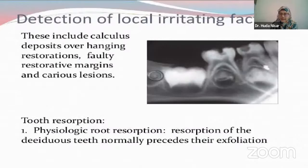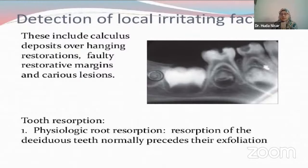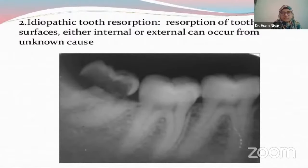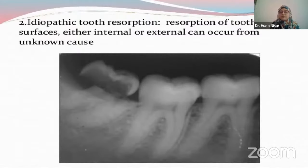Detection of local irritating factors: local irritating factors could be calculus or overhanging restoration, both of which you could appreciate radiographically. Calculus could be seen as a radiopaque mass, which is not very well defined, and is visible only in patients with very heavy calculus — it will appear around the neck of the tooth. Now we have tooth resorptions. Physiological resorptions are when teeth are shedding off and the resorption is smooth. Then we have idiopathic external and internal resorption, where we cannot determine the reason why the resorption is happening — and here radiography is very important, especially as such resorptions are internally stimulated and especially in deciduous teeth.